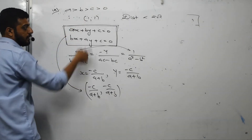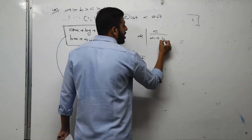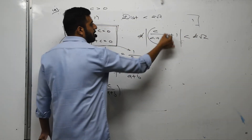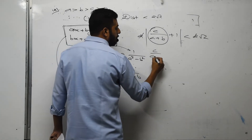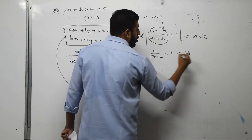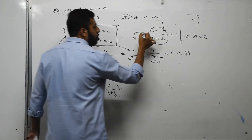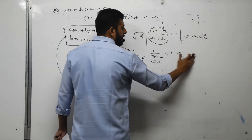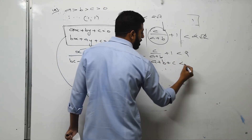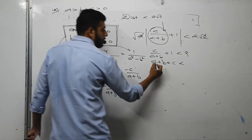Applying the distance formula between (1,1) and (minus c/(a+b), minus c/(a+b)) and removing the square root: root 2 times the modulus of (c/(a+b) plus 1) is less than 2 root 2. Simplifying: modulus of (c/(a+b) plus 1) less than 2. Since A, B, C are positive, removing the modulus and simplifying: A plus B plus C is less than 2(A plus B), so A plus B minus C is greater than 0.